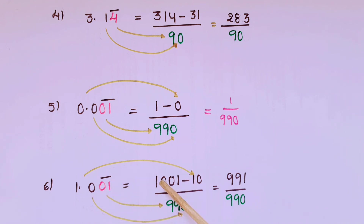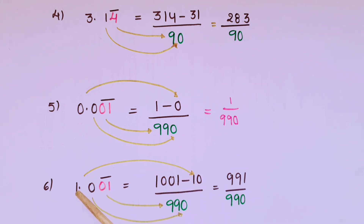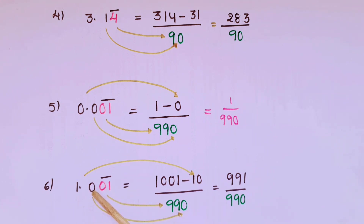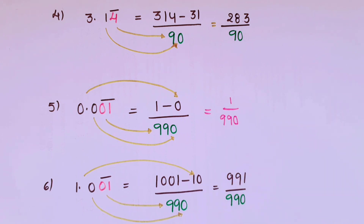The next one is 1.001 bar. First write the whole number, that is 1001, then minus the remaining digits which are not below the bar — those are 1 and 0, so write 10. Below the bar there are two digits repeating, so write 99. After the decimal there is only one digit that is not repeating, so write 10. That is equal to 991 by 990.